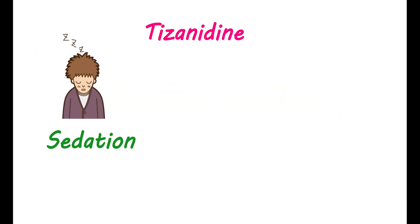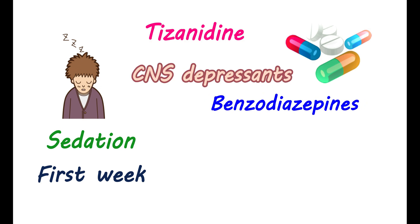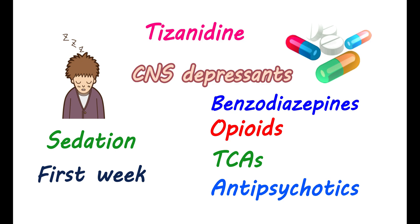Tizanidine can produce sedation, which may impair daytime activities. This sedation can be observed within the first week of treatment but may stabilize after prolonged use. Sedative effects can be further increased by CNS depressants. Benzodiazepines, used for anxiety, can produce significant sedation when combined with Tizanidine. You should also be cautious with opioids, which produce central depression and can cause profound sedation when combined with Tizanidine. Tricyclic antidepressants and antipsychotics can also enhance sedation.